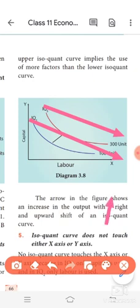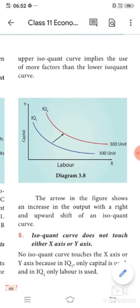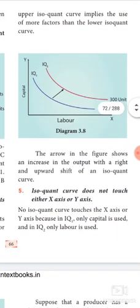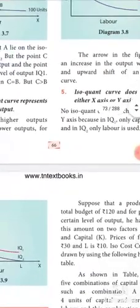Additionally, the isoquant curve does not touch either the x-axis or the y-axis. This is because both factors of production are required to produce output — if either factor becomes zero, production is not possible. Therefore, the isoquant curve always remains within the positive quadrant without touching either axis.